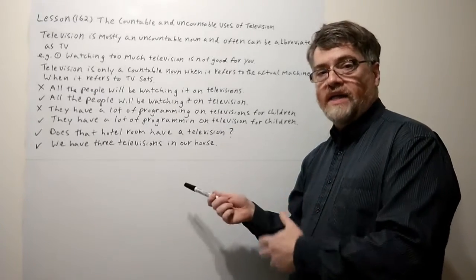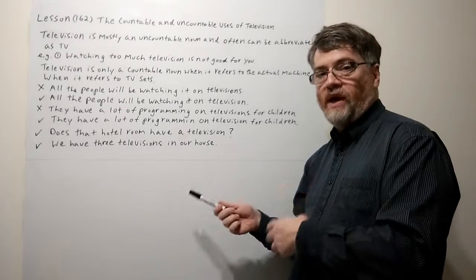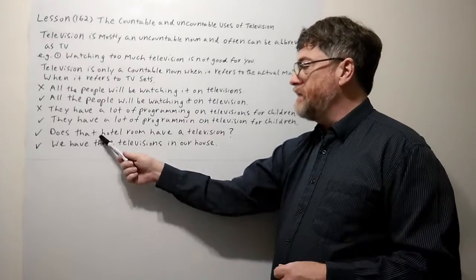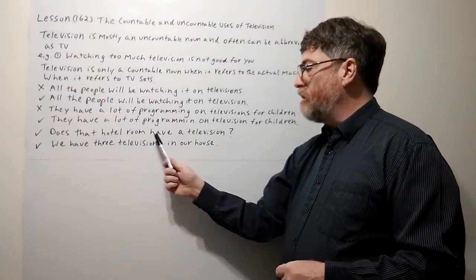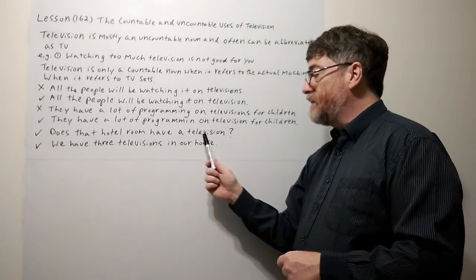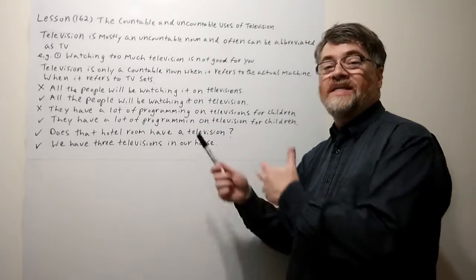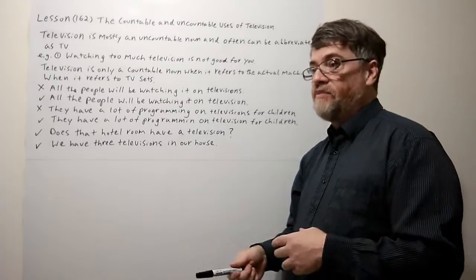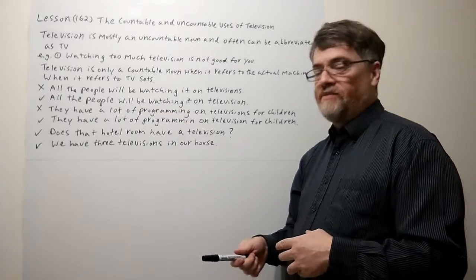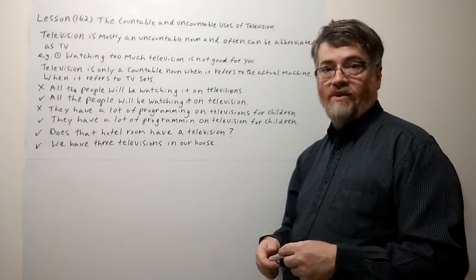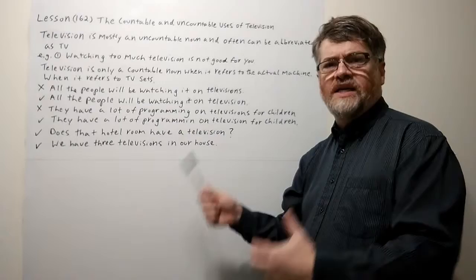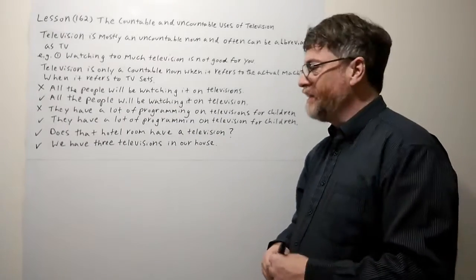The last two examples show where television is countable. You could say, 'Does that hotel room have a television?' — we say 'a television,' so it is countable. Or the opposite: 'That hotel room doesn't even have a television.'